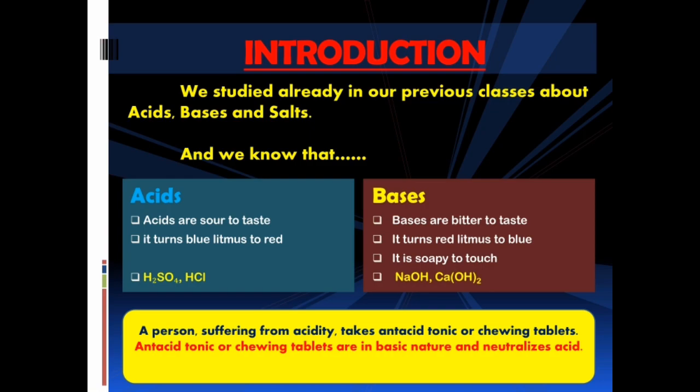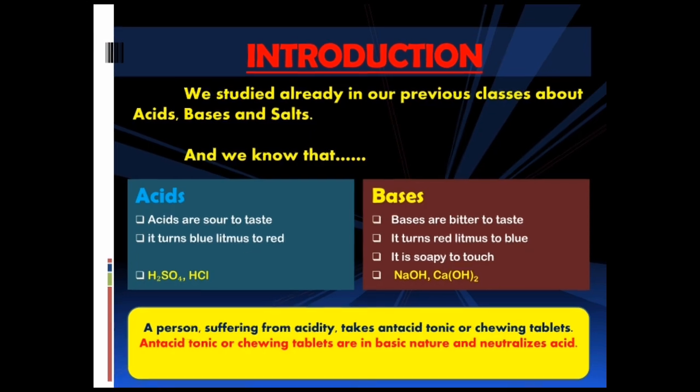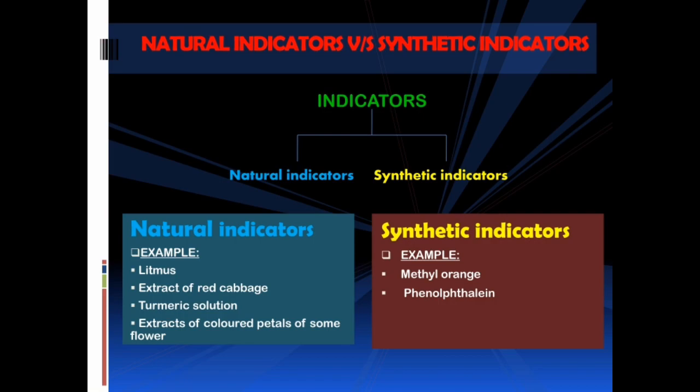We have two types of acid-base indicators: natural indicators and synthetic indicators. Acid-base indicators are used to check the nature of solutions. Some examples of natural indicators are litmus, extract of red cabbage, turmeric solution, and extracts of colored petals of some flowers. On the other hand, methyl orange and phenolphthalein are some examples of synthetic indicators.